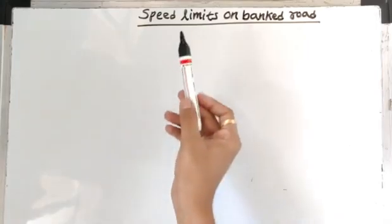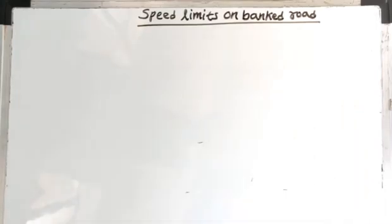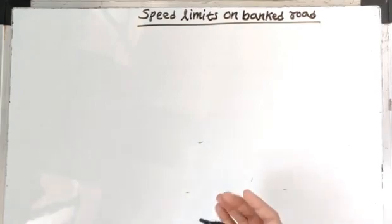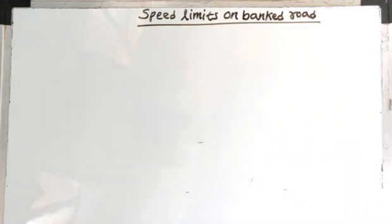Now we will discuss the speed limits of a vehicle on a banked road. There are two speed limits: the lower speed limit and the upper speed limit of a vehicle on a banked road.